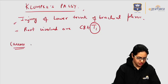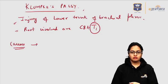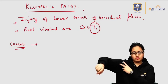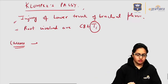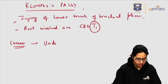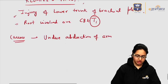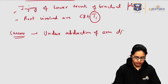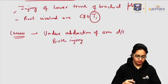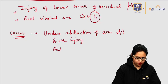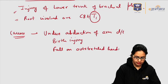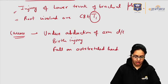The cause for this is undue abduction of the arm. If there is undue abduction of the arm like this, there will be pulling or traction of the lower trunk. This undue abduction of the arm can be due to birth injury, and it can also be due to a fall from height — specifically a fall on an outstretched hand.